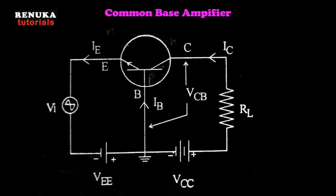The first configuration is the common base configuration, also called grounded base configuration. In the circuit diagram, the emitter-to-base junction is forward biased and always connected to the input side. The input voltage is connected to the emitter-base side in series with the DC voltage VEE. On the output side, the collector is connected to the load resistance RL in series with VCC, and the output voltage VCB is obtained between collector and base. The input side is forward biased and the output side is reverse biased.